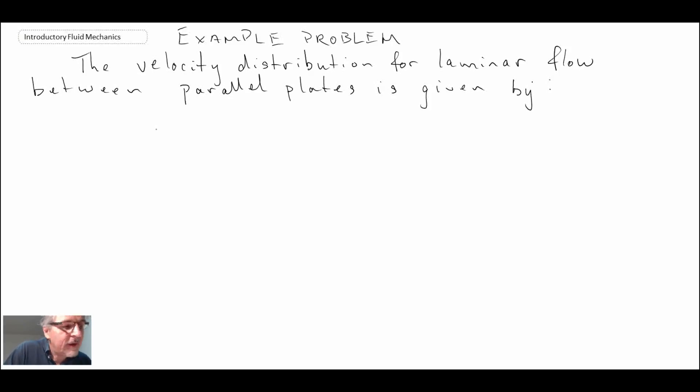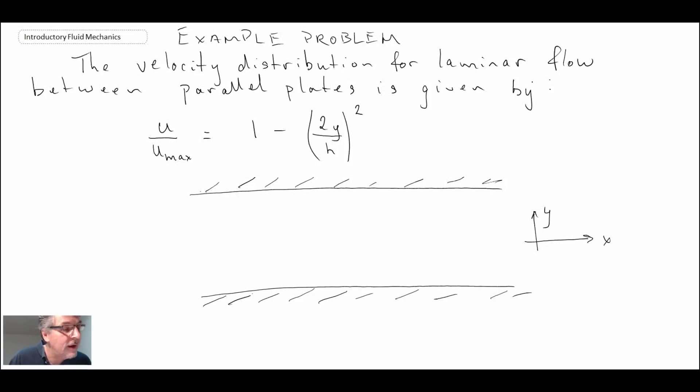We're told that the velocity profile is u as a function of some maximum velocity between the plates, given by this equation: u over u_max equals 1 minus (2y/h) squared. The geometry we're dealing with has an upper plate and both plates are fixed. We'll define a coordinate system x and y about the center line. The fluid flowing is water at 15 degrees Celsius, and the channel height is h equals 0.5 millimeters.